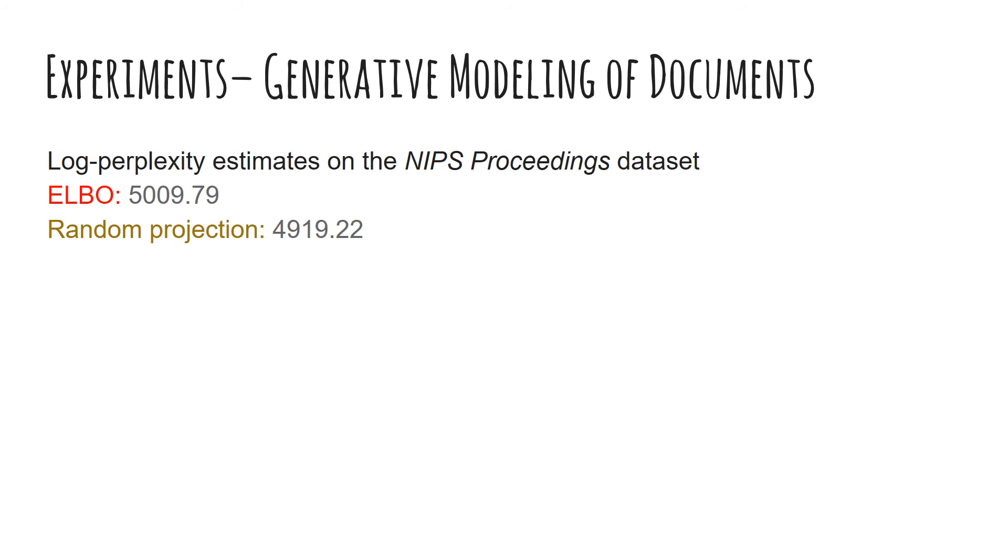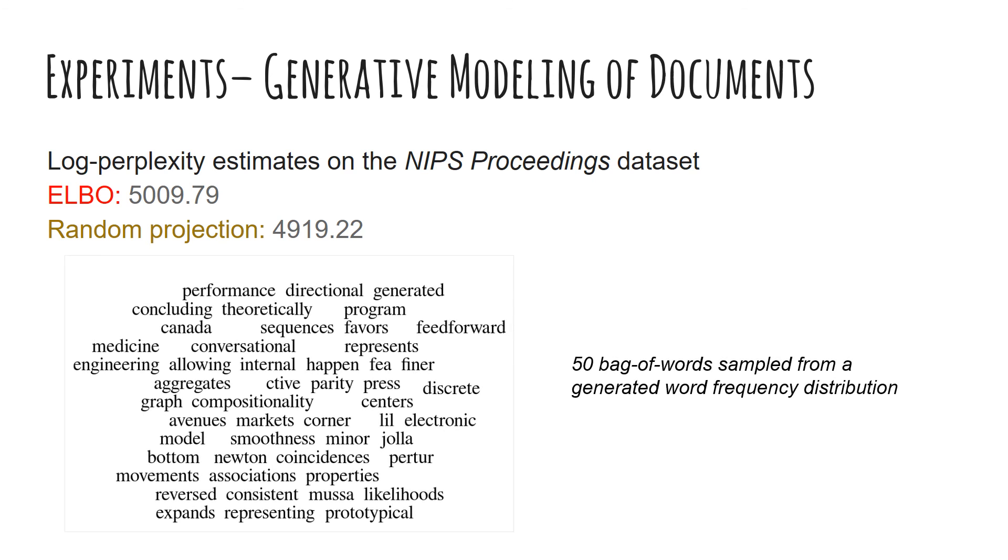Similarly, for document modeling on the NIPS proceedings dataset, the randomly projected estimate of the log perplexity is tighter than the ELBO estimate. Qualitatively, it generates word frequency distributions that are highly reflective of the expected trend.